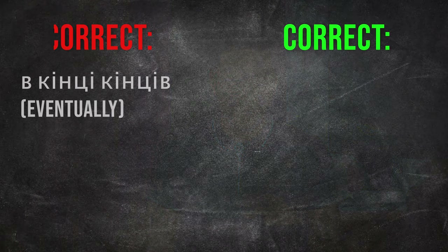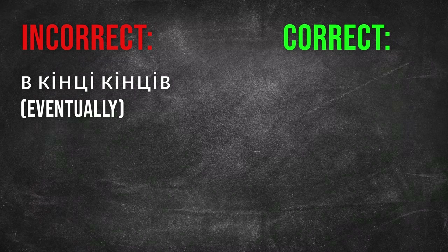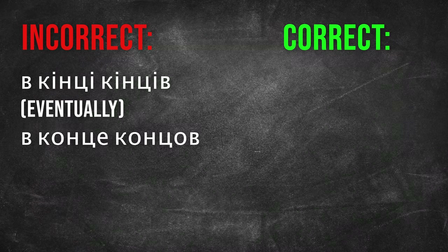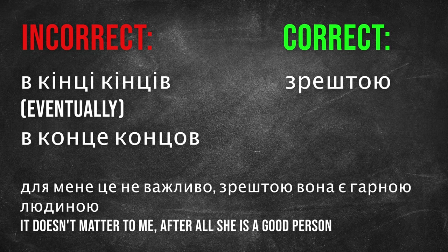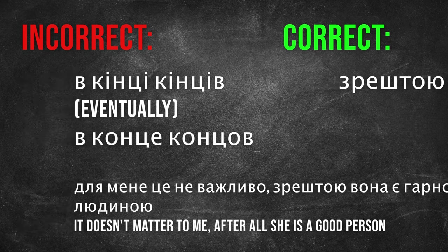It's not correct to say «В кінці кінців». In Russian it sounds like «В конце концов». But it is correct to say «Зрештою». For example: «Для мене це не важливо. Зрештою вона є гарною людиною.»